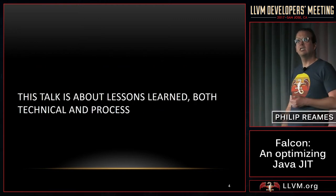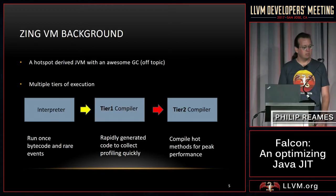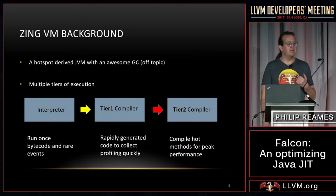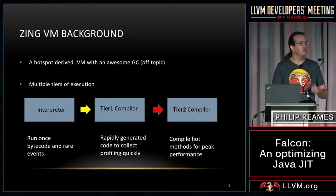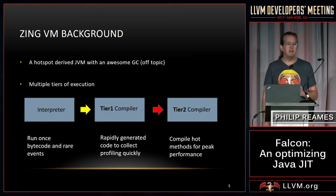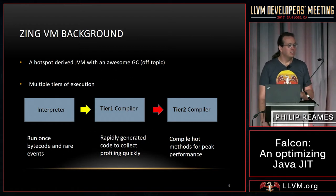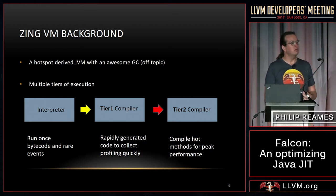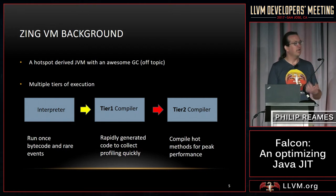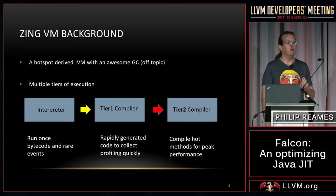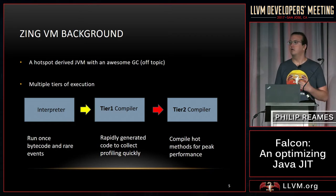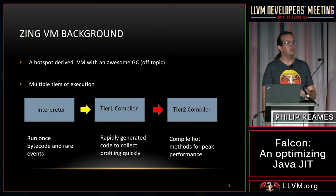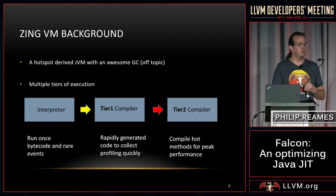This talk is going to be about the lessons we learned along the way of building Falcon. Zing is a JVM — our traditional claim to fame is a really awesome concurrent GC, but I'm not going to talk about that today. The important bit of context you need to know is that there are multiple tiers of execution within a JVM. There is an interpreter that runs the bytecode very slowly and handles rarely executed code, and a tier 1 compiler whose primary job is to generate code that profiles quickly, so that the tier 2 compiler gets fed a very accurate profile and can make aggressive speculations based on that information.